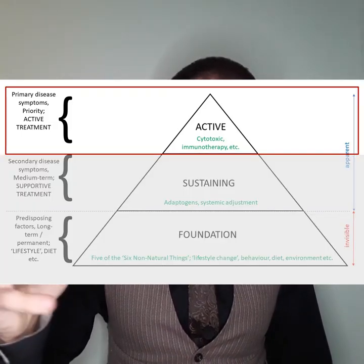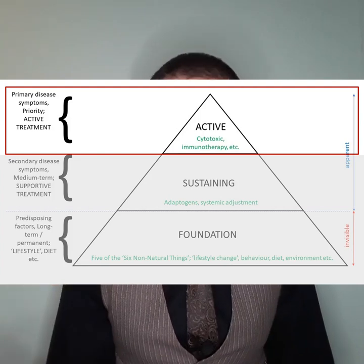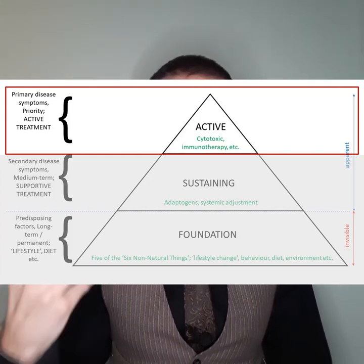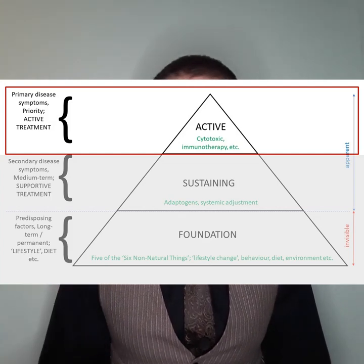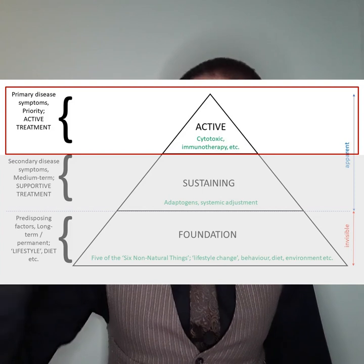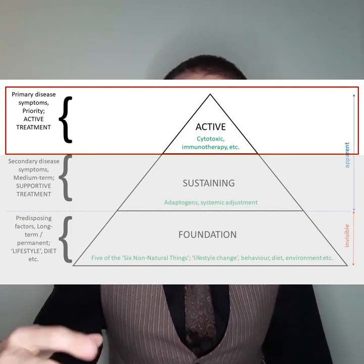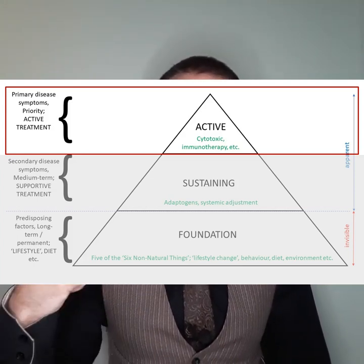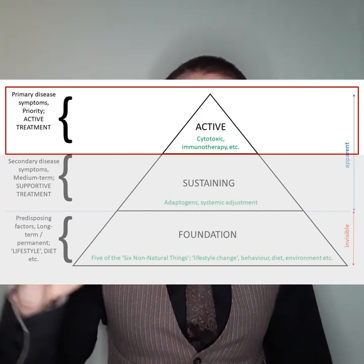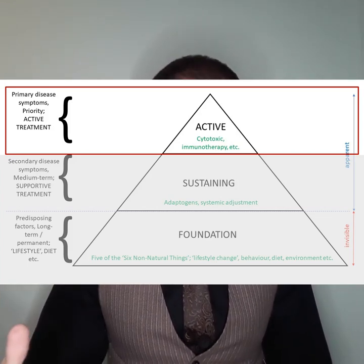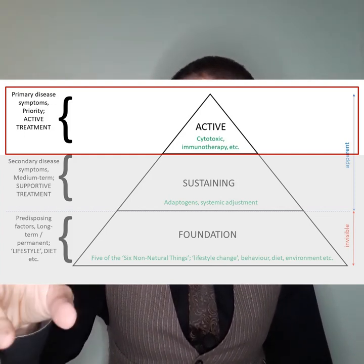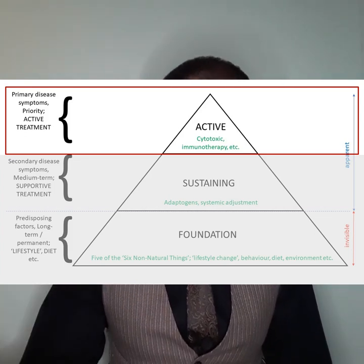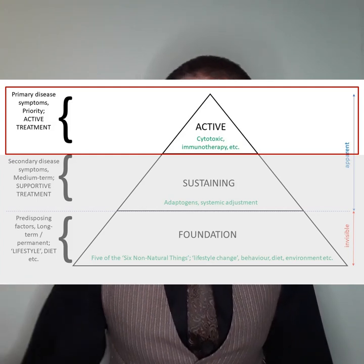For cancer, the top layer — the active treatment layer — covers the active symptoms of the disease, particularly if there's an active tumour, any lumps, fatigue, weight loss, night sweats, and so on. In terms of treatment, this represents the business end: any element designed to attack and kill cancer cells or eradicate symptoms. Conventional oncology tends to be focused here, so this is where you'd find chemotherapy, cytotoxic drugs, immunotherapy, and radiotherapy.